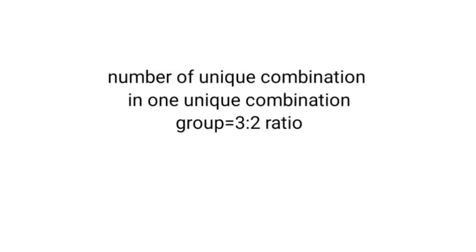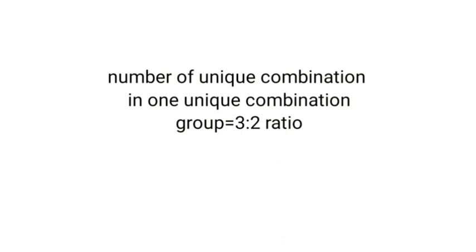To find the number of unique combinations in one unique combination group, we use a recursive ratio approach. For ABCDE, we need to know how many unique combinations ABCD has. We find that ABCD has 2 unique combinations, so we multiply by 3 to get the next level. In general: to find unique combinations for n letters, find it for n−1 letters and multiply. So 3-letter gets multiplied by 2, 4-letter by 3, 5-letter by 4, and so on.